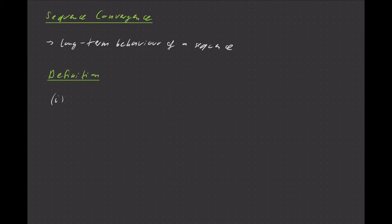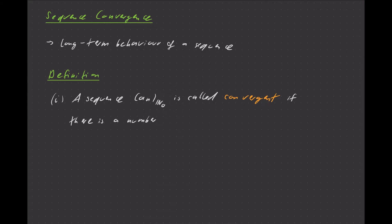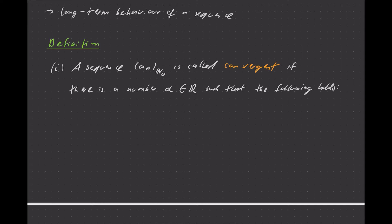More precisely, let's say we have a sequence a_n with index set n_0. This is called convergent if there is a number — usually called alpha here, to avoid confusion with the sequence itself — that is a real number, such that the following holds. Let me first give you the idea. Say this is a real number on a number line, with indices 1, 2, 3, 4, 5, and so on.